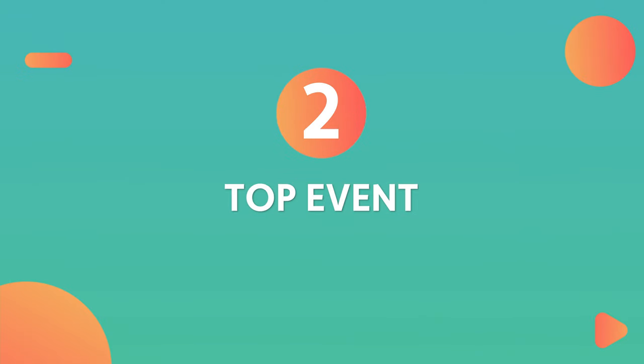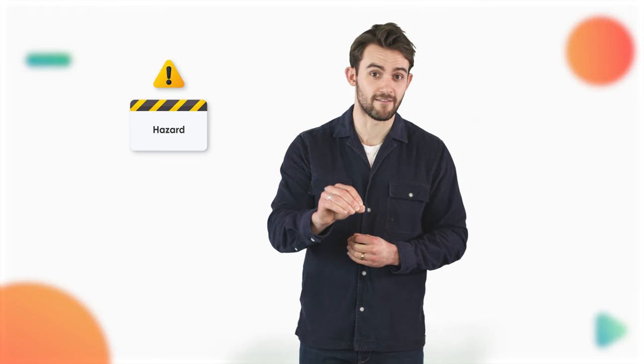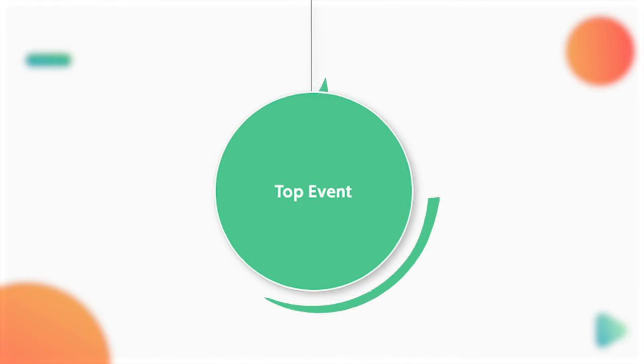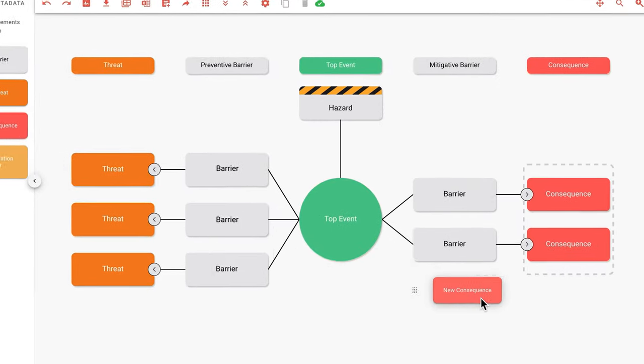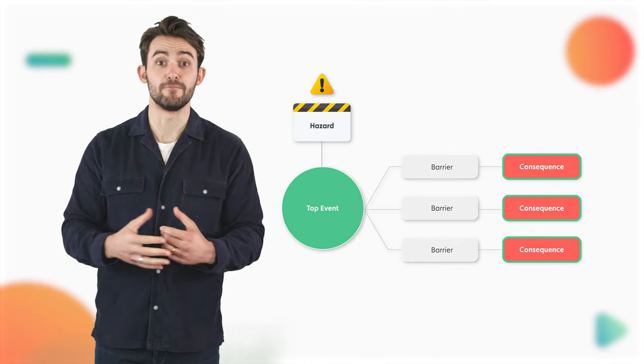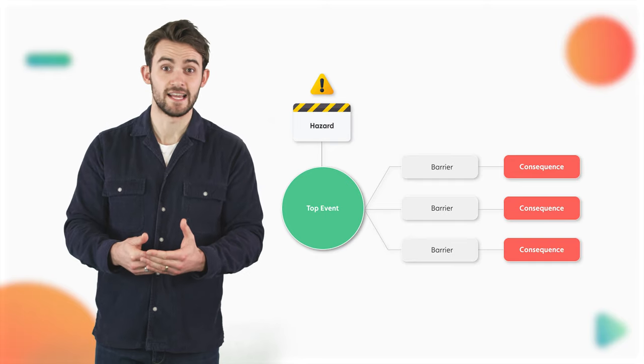Next up, number two: top event. This is the pivotal point in the bowtie diagram — in fact, this is the knot in the bowtie shape. It represents the moment where control over the hazard is lost, but adverse consequences haven't yet occurred. Everything in the diagram revolves around preventing this top event from happening or mitigating its effects. In our road safety example, the top event might be loss of control of the vehicle. Here's a tip: ensure your top event does not depict a consequence. At the moment of the top event, there is still time to recover — this is why the top event for our road safety example would not be 'car crash.' So now we ask ourselves: if that's the top event, what are the consequences of that?